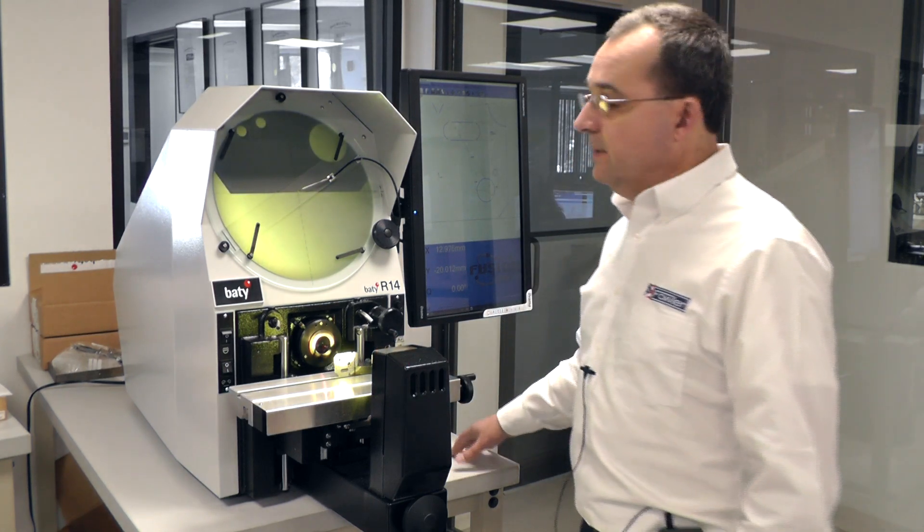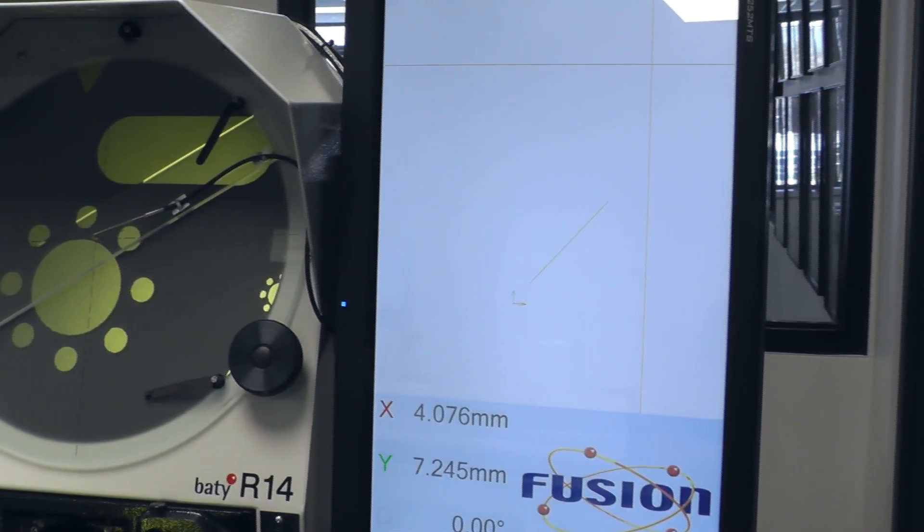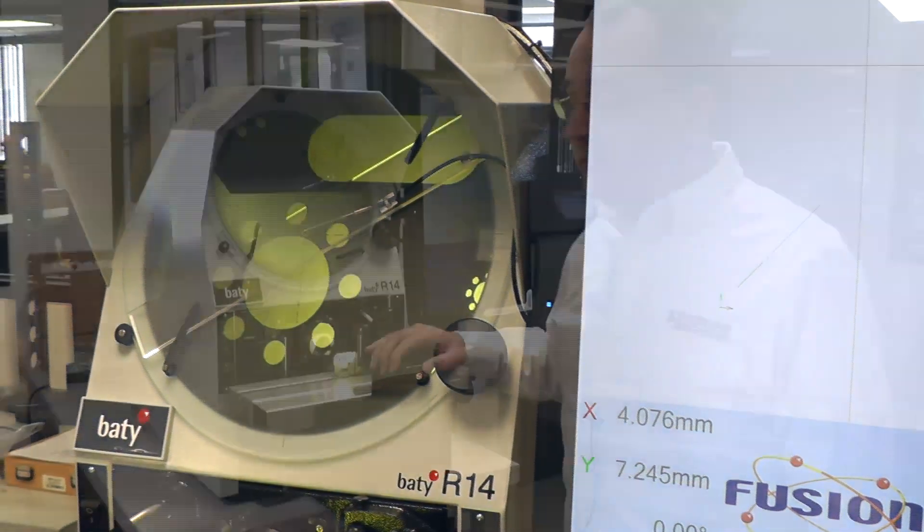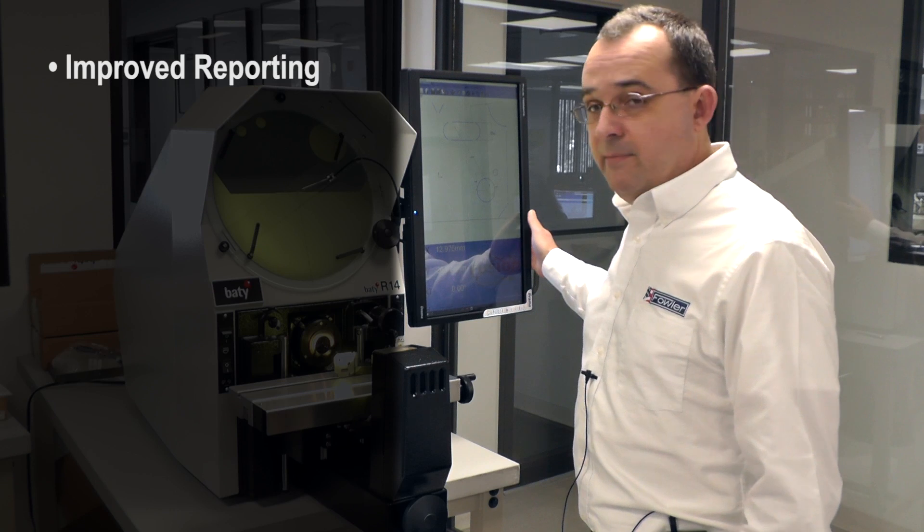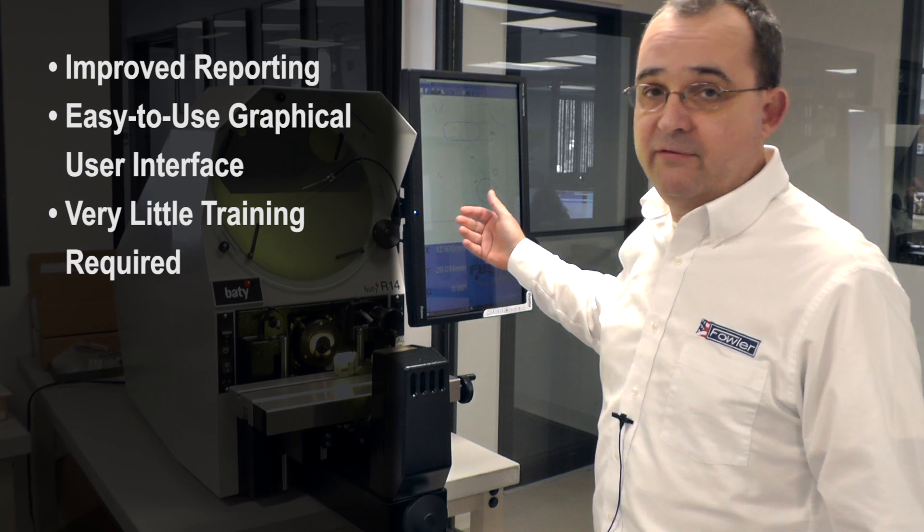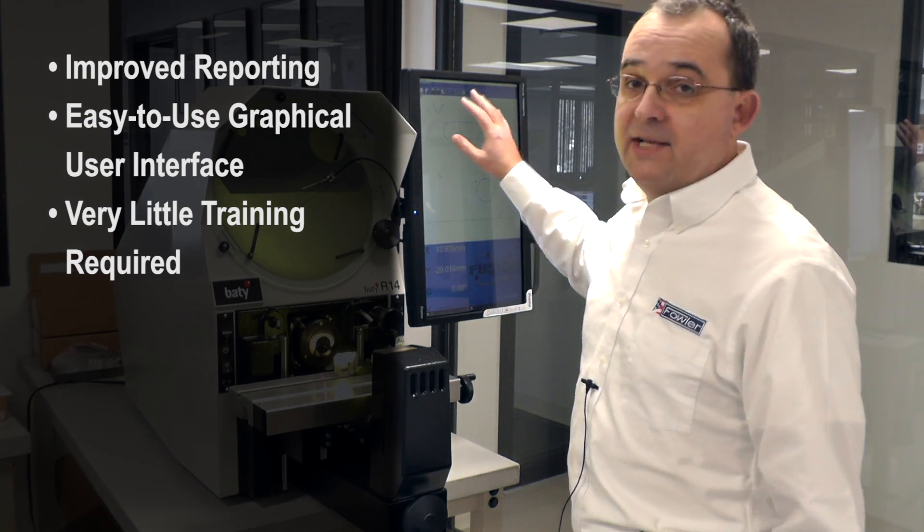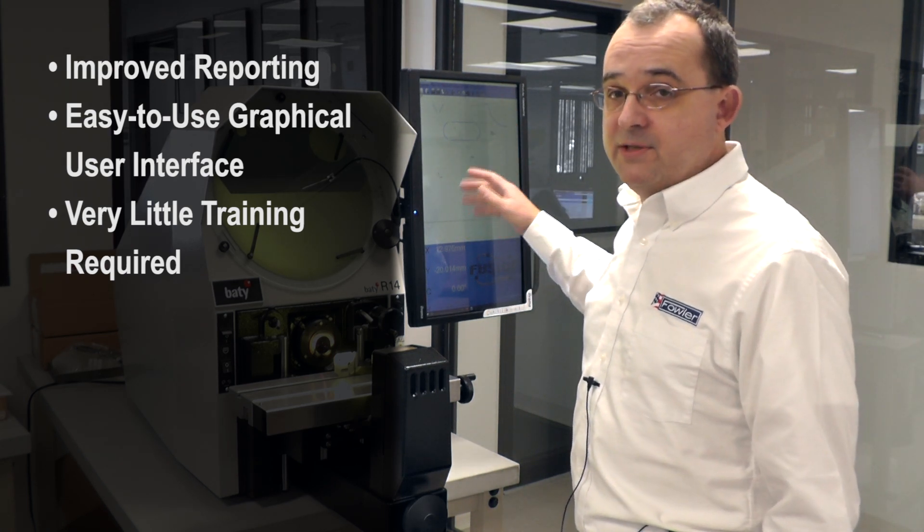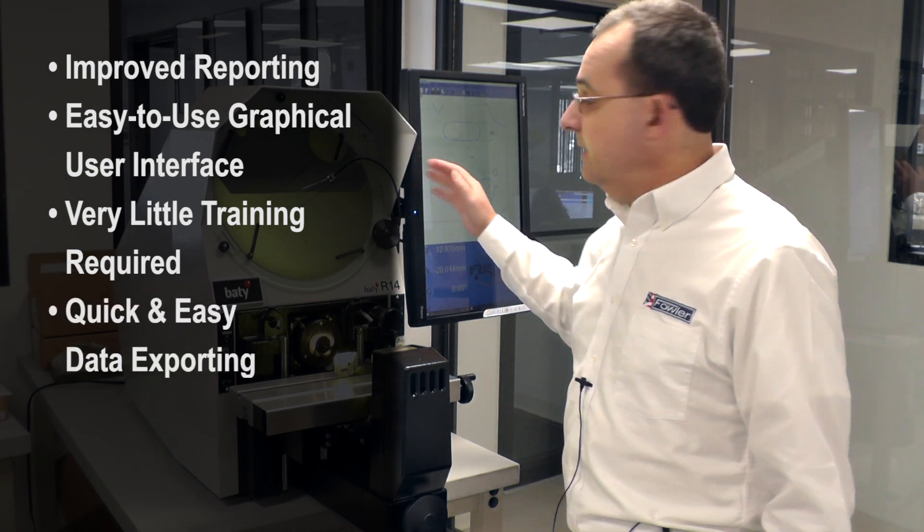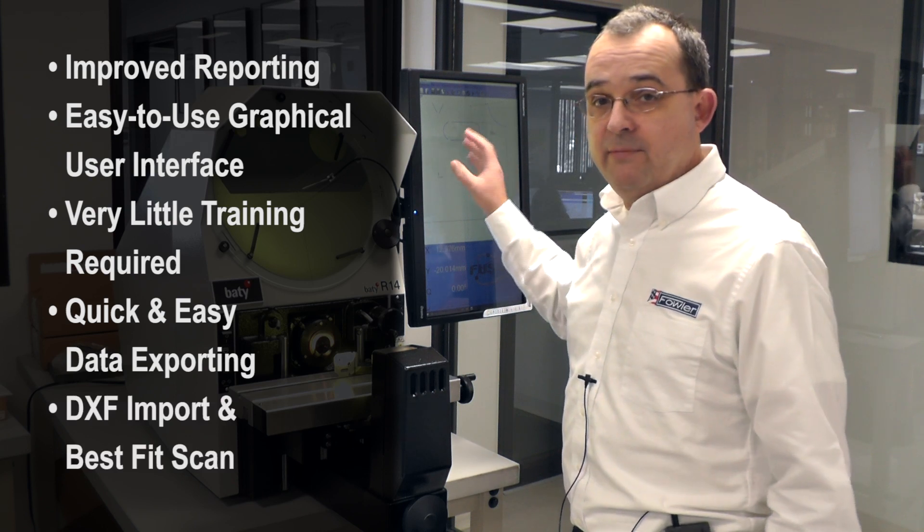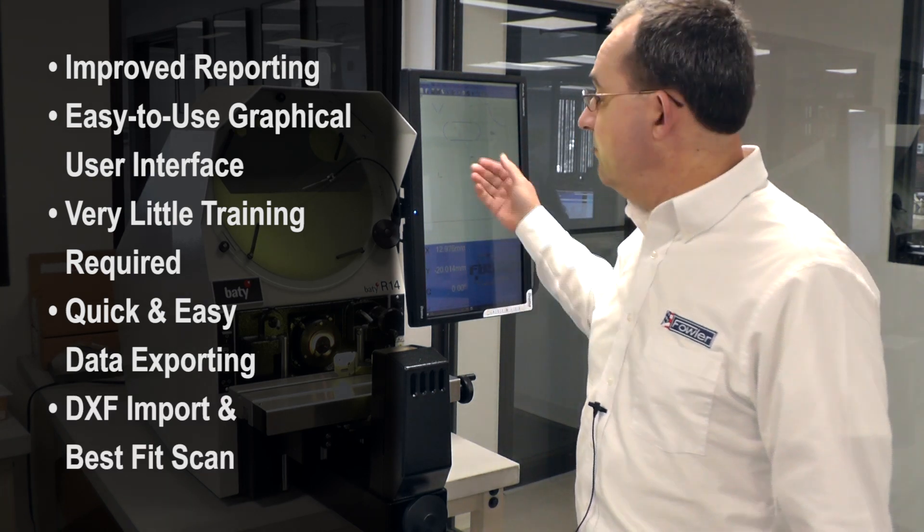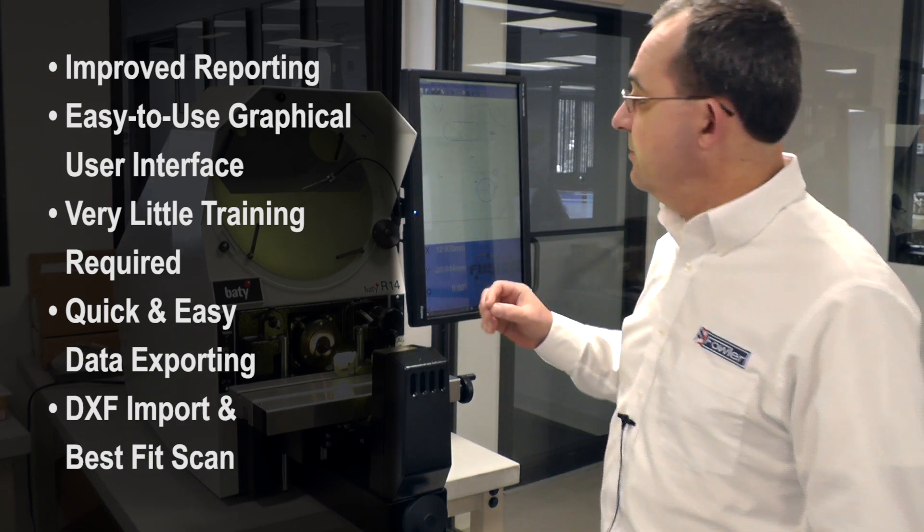To sum up the performance features of the new FT2E on Fowler Gauge Master or existing retrofit comparators, you get new improved reporting, a very easy to use graphical user interface. It'll require very little training for your staff especially the guys that are just doing one or two measurements and then moving on. You get the ability to export your data easily and quickly. We have DXF import and best fit scan requirements which will be brought into another video which is more in-depth featuring.